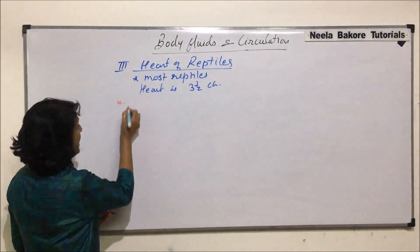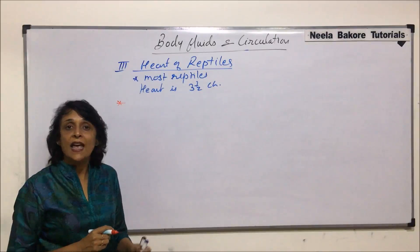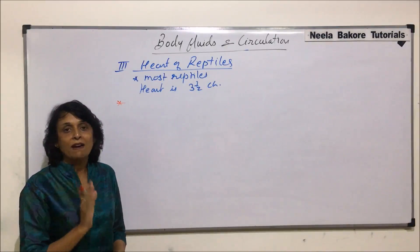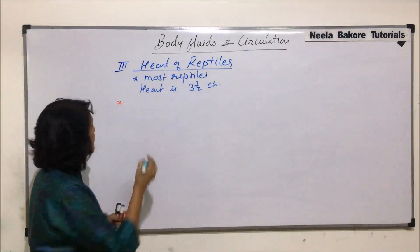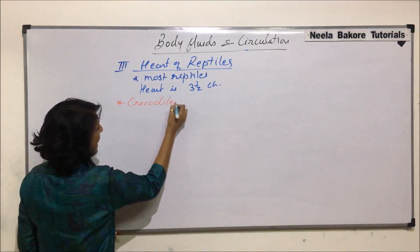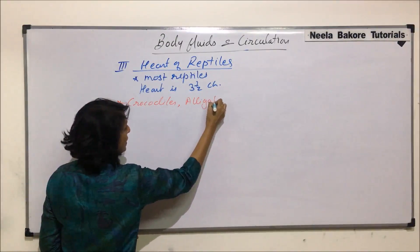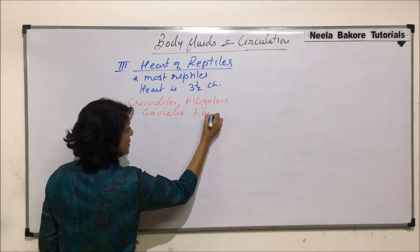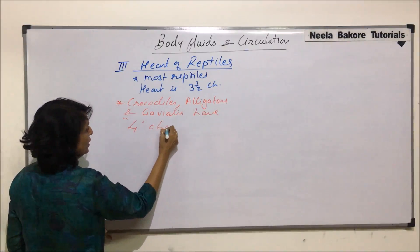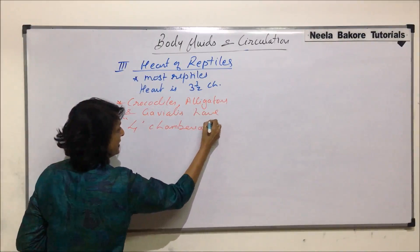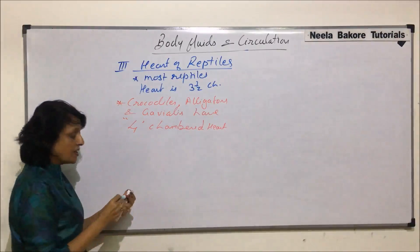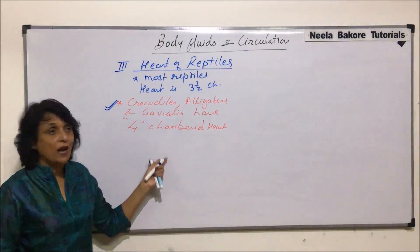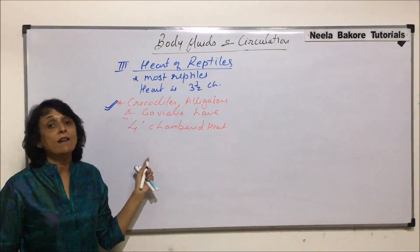But here we have exceptions. In crocodiles, alligators, and gavialis, they have a four-chambered heart — that means there is a complete partitioning of the ventricles. So crocodiles, alligators, and gavialis have a four-chambered heart. This is like higher organisms, that is birds and mammals, which also have a four-chambered heart. But these three reptiles have four chambers while others have three-and-a-half.